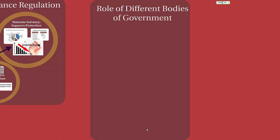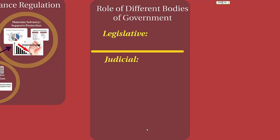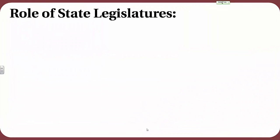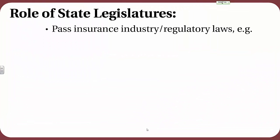Now let's discuss the role of different bodies of government in regulating insurance. We'll start with the legislative branch, then the judicial branch, and then the executive branch. The role of state legislatures includes passing insurance industry regulatory laws — for example, producer and claims licensing laws regulating all aspects of producer and claims licensing in order for someone to do business in that state.